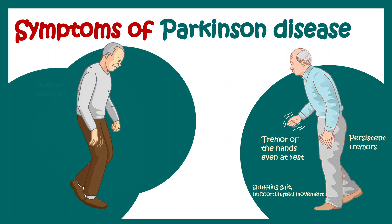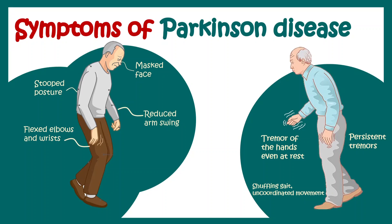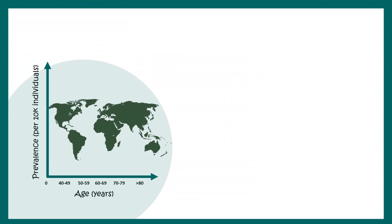Other symptoms include stooping posture, masked face, reduced arm swing, and flexed elbow and wrist. Parkinson's is pretty common these days among the aging population. The optimal age where Parkinson's develops is beyond 60, and it is more prevalent in males compared to females.